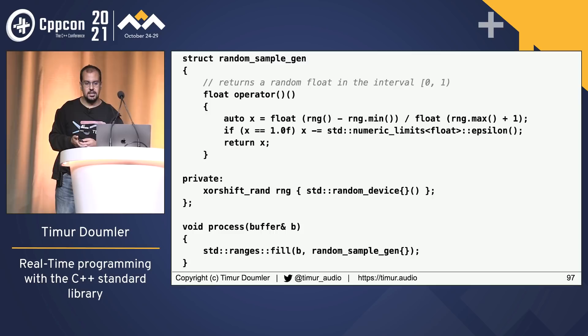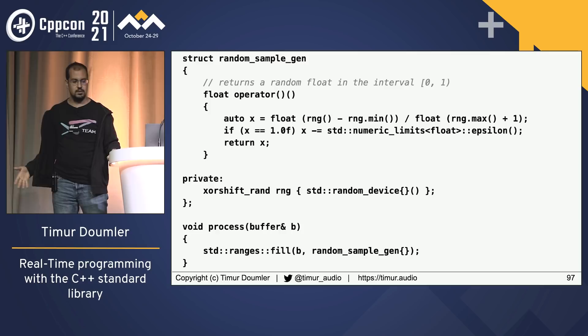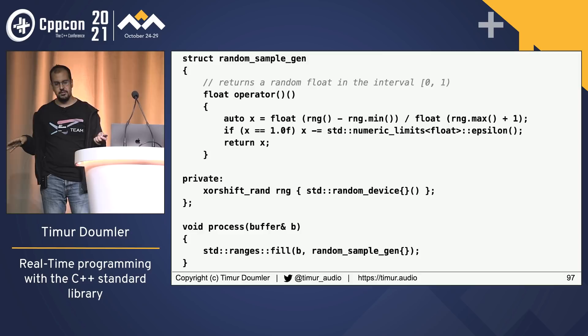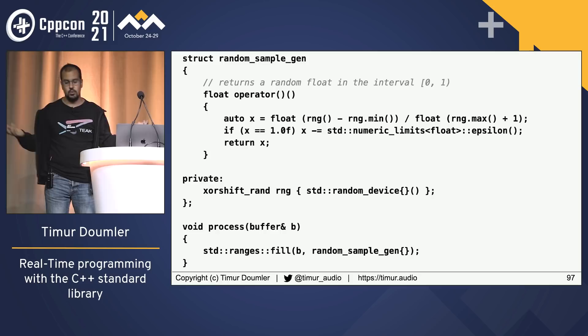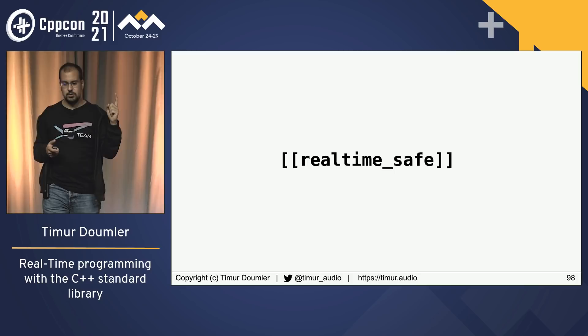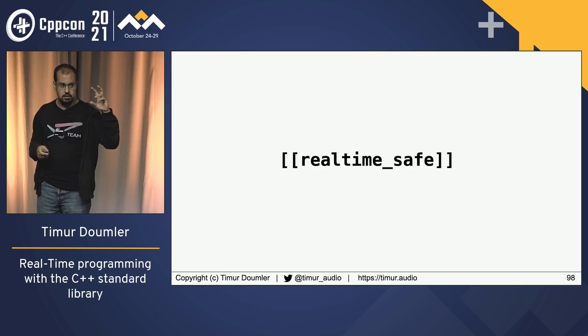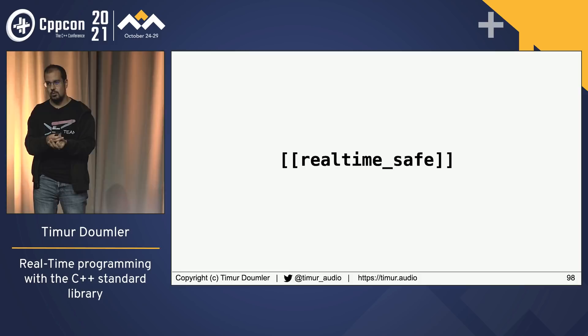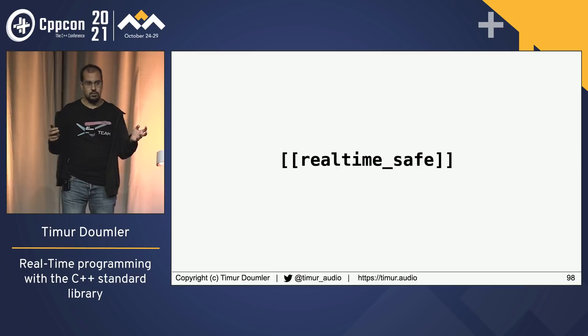We've reached the end of the talk. I hope I gave you a sense of what it's like to use the C++ standard library for real-time programming. Mostly it's okay, but you end up using lots of custom implementations and third-party solutions instead of the standard stuff. If I could have one thing, I'd really like an attribute you can put on a standard library function that tells the user: this is not going to allocate memory, it's not going to try to acquire locks. That would be great to have, either in the standard or through tooling support.